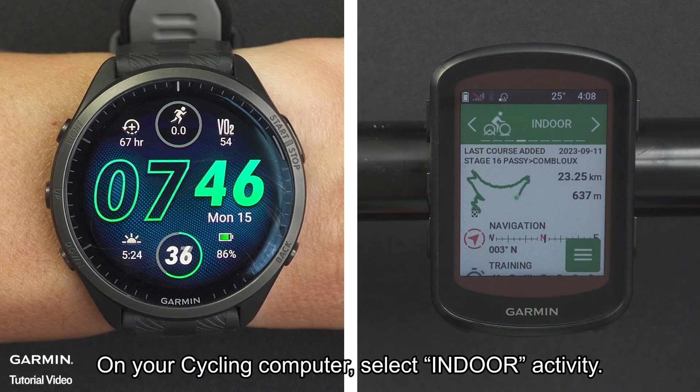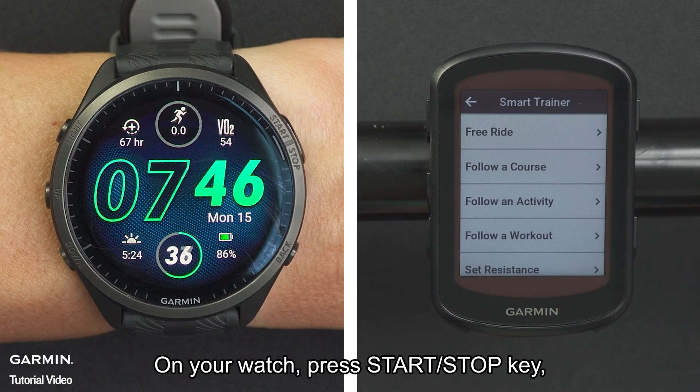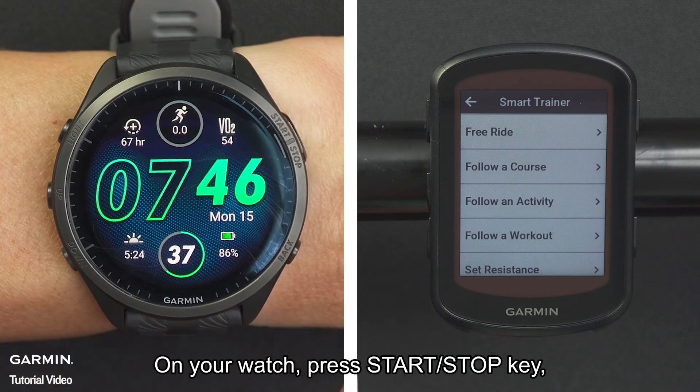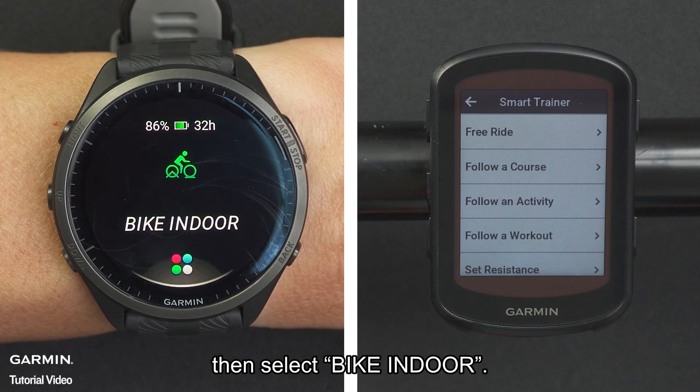On your cycling computer, select Indoor Activity. On your watch, press Start-Stop key, then select Bike Indoor.